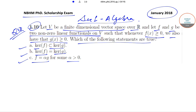We've been told that V is a finite-dimensional vector space over R, and F and G are two non-zero linear functionals on V, such that whenever F(x) ≥ 0 we also have G(x) ≥ 0.